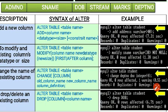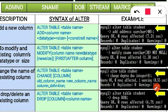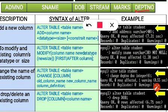To rename an existing column, use: ALTER TABLE table_name CHANGE old_column_name new_column_name data_type size. For example, to rename department_number to d_number: ALTER TABLE student CHANGE department_number d_number INTEGER(4). The CHANGE keyword renames the column along with its definition.